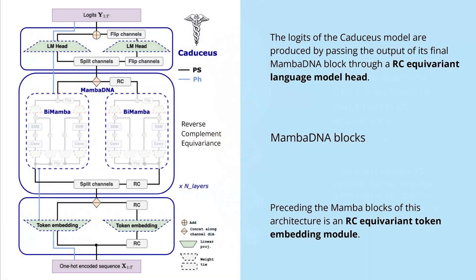Trained with the masked language modeling objective used in the classical BERT system, here is the complete structure. At the bottom we start with an RC equivariant token embedding module, with the reverse complement token embedding integrated. You then split the channel when entering the Mamba DNA blocks, giving you two bidirectional Mamba blocks — one for the standard sequence and one for the reverse complement equivariance calculation. The logits of this new DNA language model are produced by passing the output of the final Mamba DNA block through an RC equivariant language model head.